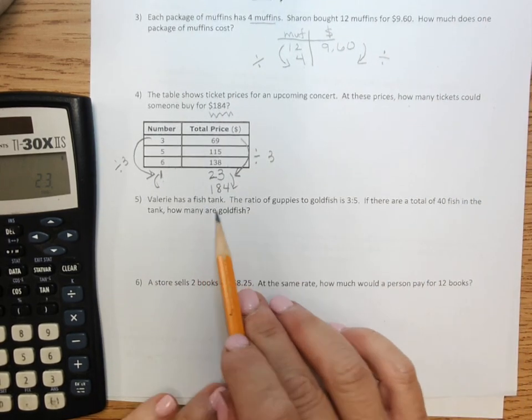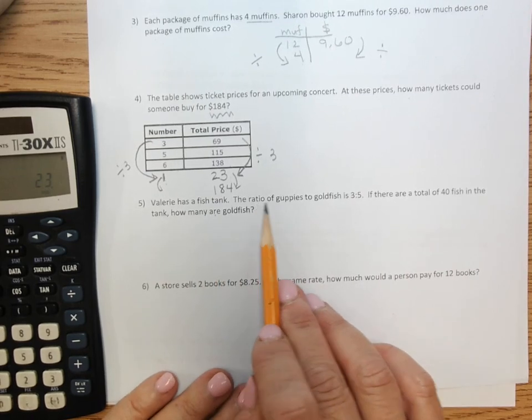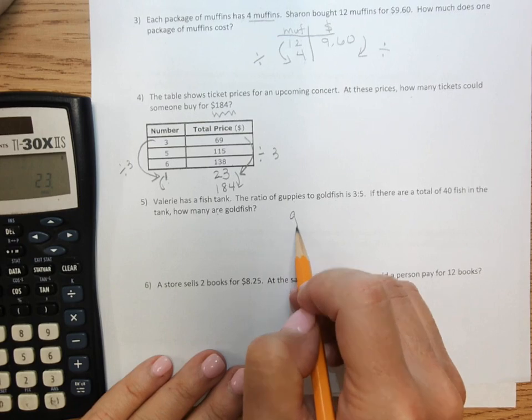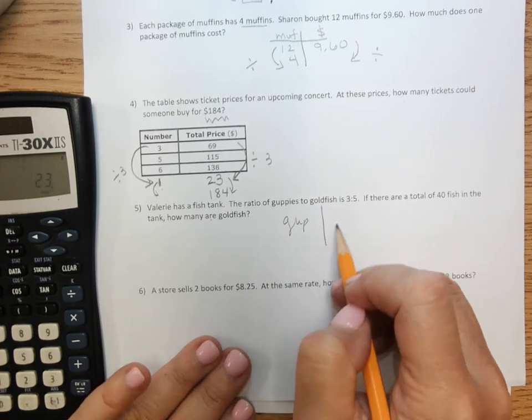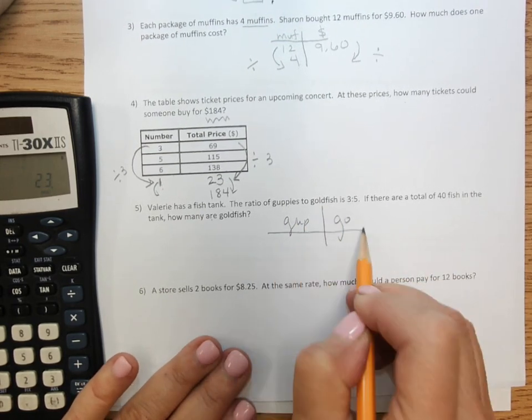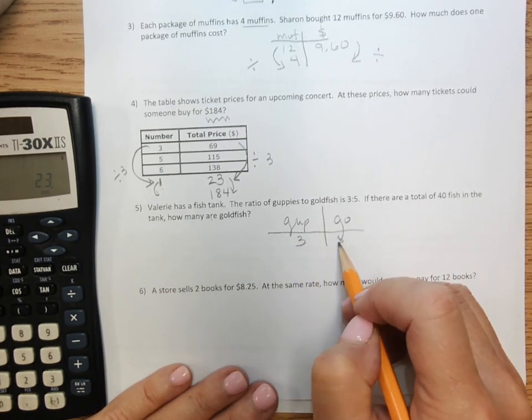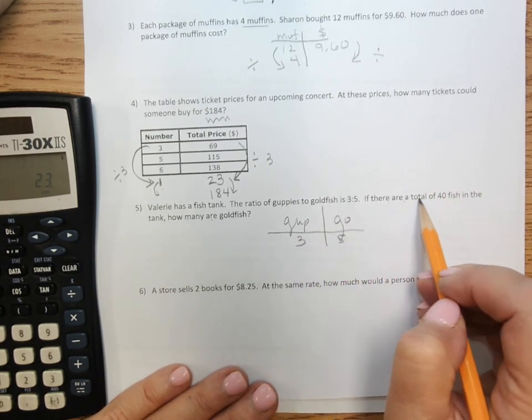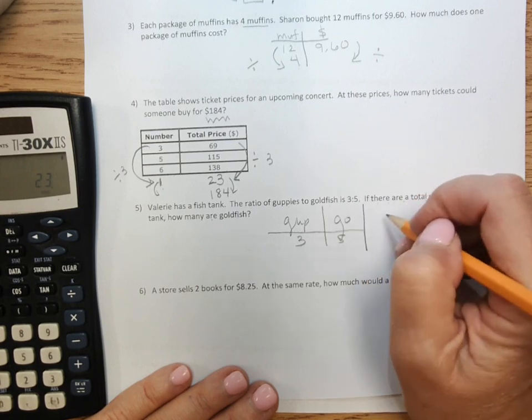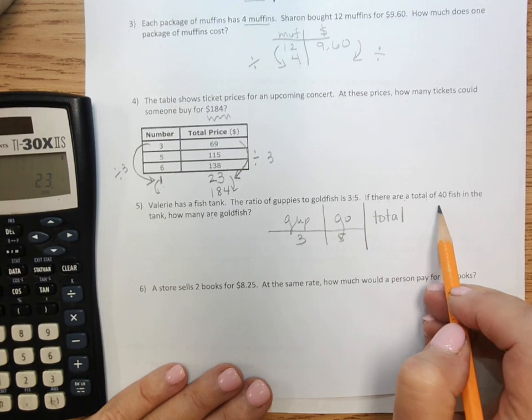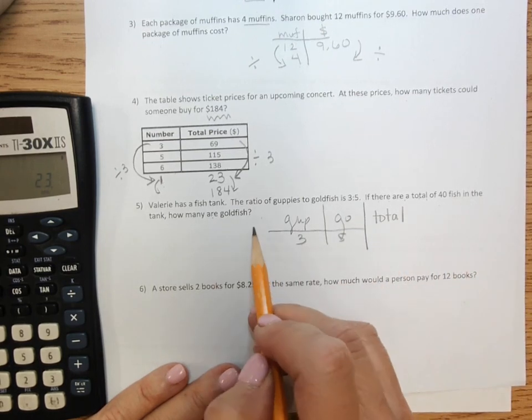Valerie has a fish tank. The ratio of guppies to goldfish is three to five. So I'm writing, they both start with the same letters, so I wrote more letters. So three to five. If there are a total, so I have to add a column and put total, of 40 fish in the tank, how many are goldfish?